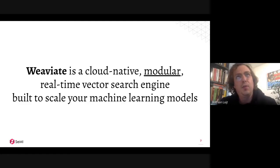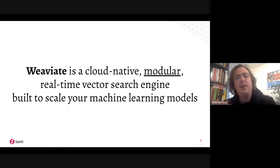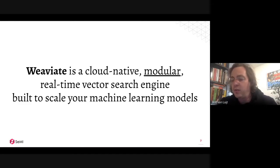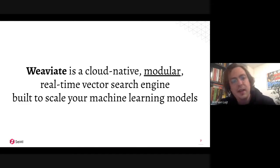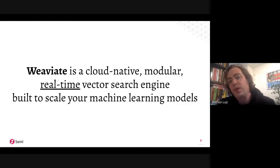The version 1 release earlier this year made Weaviate not only completely standalone but also modular. That means it's very easy for us to add plug-and-play modules to Weaviate — regardless of what those modules do. They can vectorize data, add functionality to Weaviate, and it's very easy to integrate them into the Weaviate ecosystem. We have a focus on real-time or near-real-time results.